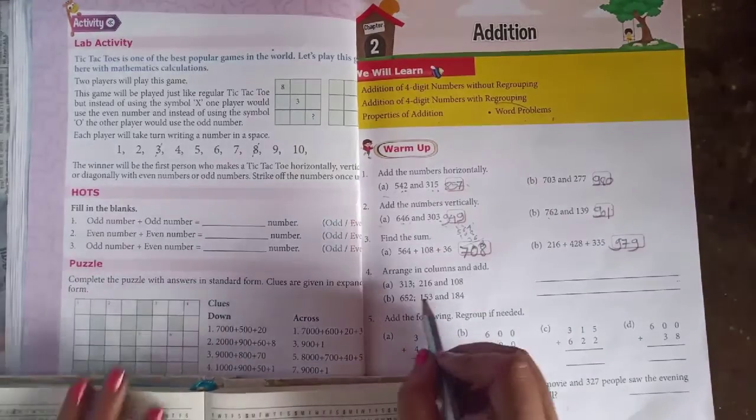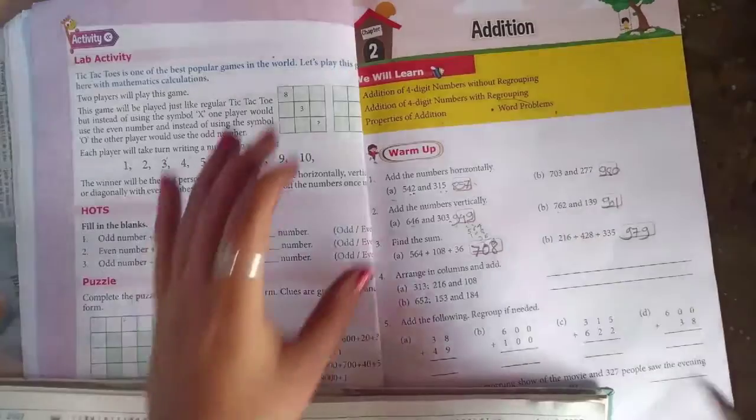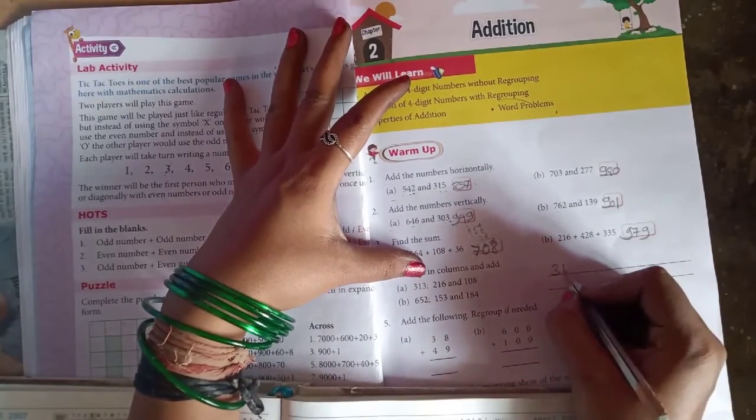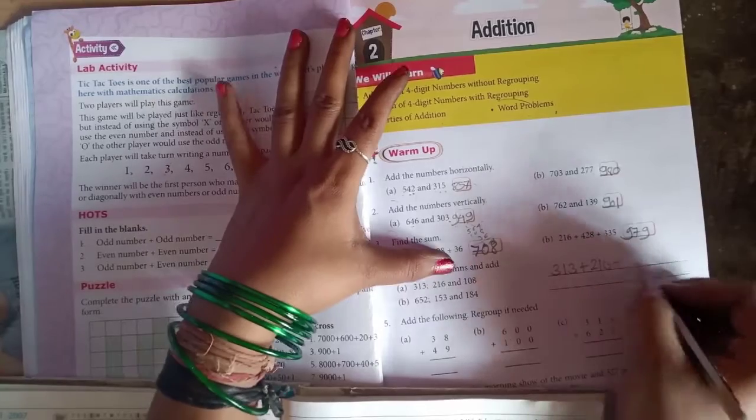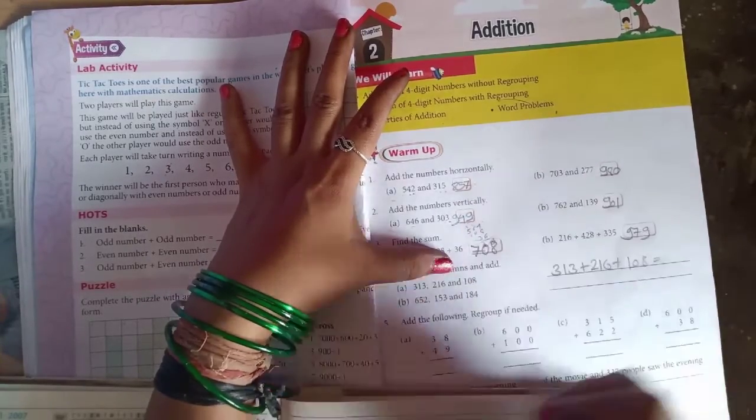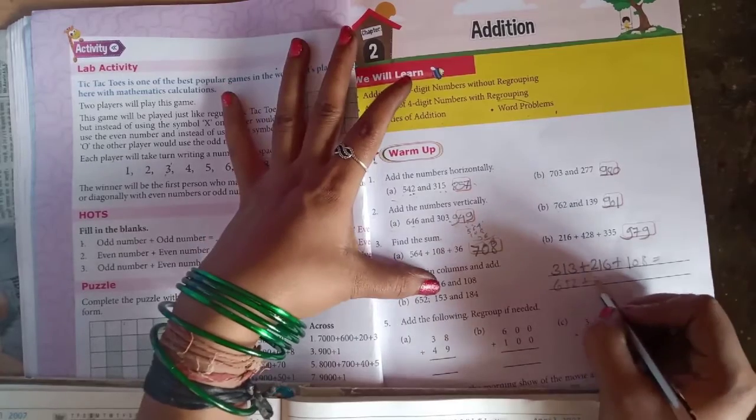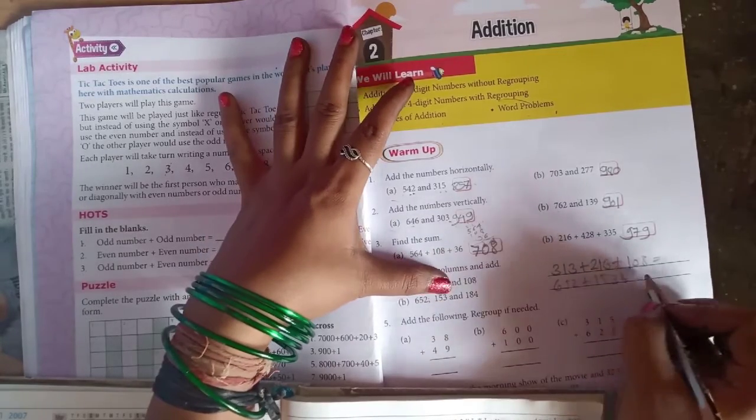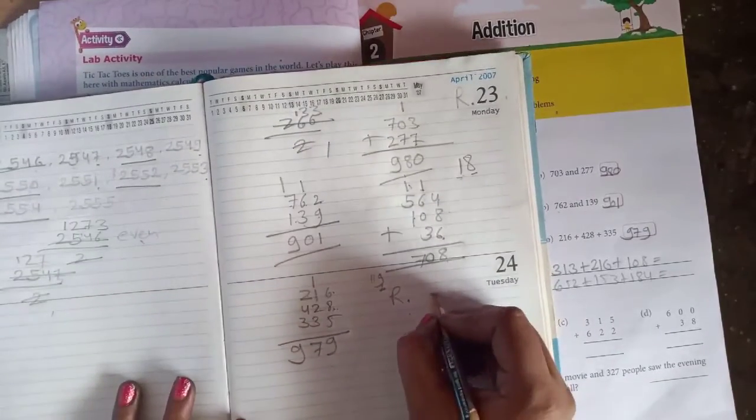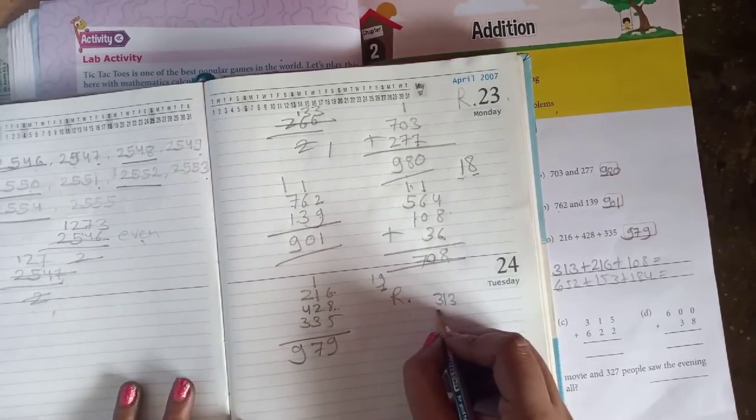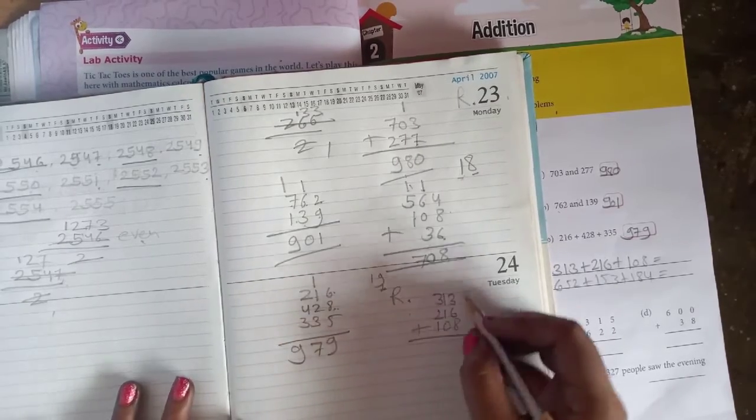You can do it as same. Arrange in column and add, understood. So what comes answer, like this: 652 plus 153 plus 184. So we can count it as 313 plus 216 plus 108. So add it.